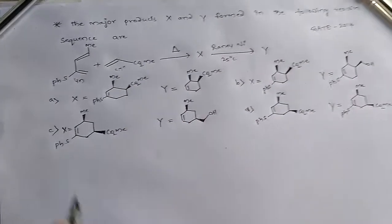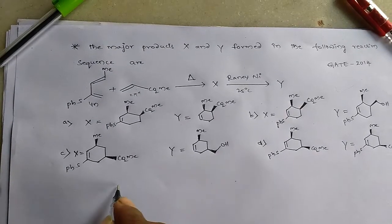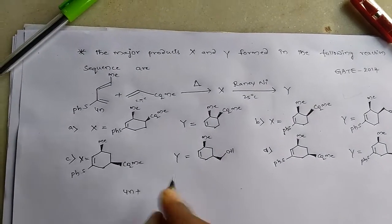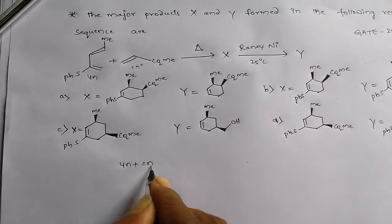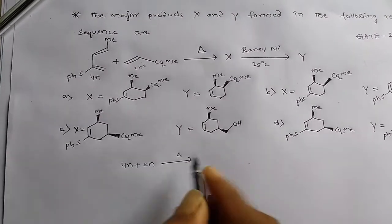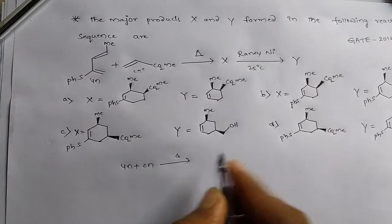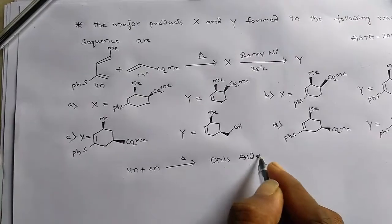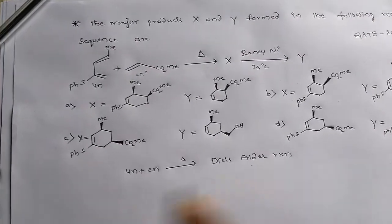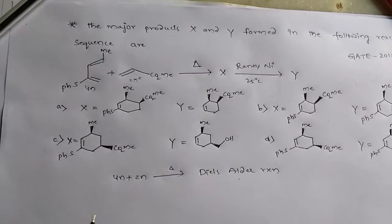So 4π plus 2π on heating. So this is simply Diels-Alder reaction, dienophile reaction.